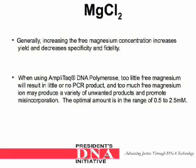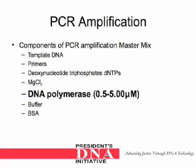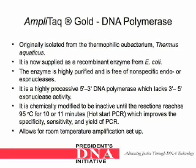The next component in the PCR amplification master mix is DNA polymerase, with concentrations between 0.5 to 5 micromolars. AmpliTaq Gold DNA polymerase was originally isolated from the thermophilic eubacterium Thermus aquaticus, and is now supplied as a recombinant enzyme from E. coli. The enzyme is highly purified and free of nonspecific endo- or exonucleases. It is a highly processive 5' to 3' DNA polymerase, which lacks 3' to 5' exonuclease activity. It is chemically modified to be inactive until the reaction reaches 95 degrees Celsius for 10 or 11 minutes. This is hot start PCR, which improves the specificity, sensitivity, and yield of PCR, and also allows for room temperature amplification setup.